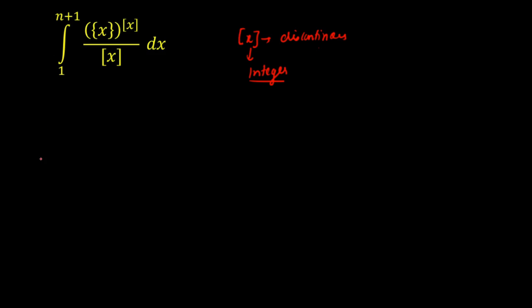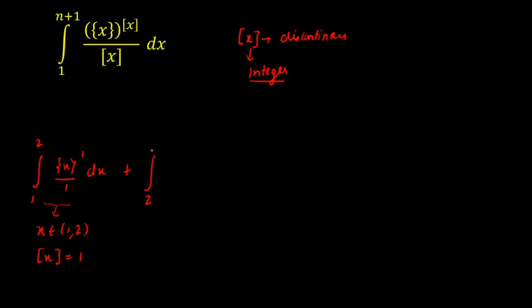First I will break the limit from 1 to 2. Since x is varying from 1 to 2, the value of [x] is fixed at 1. So I will put that value in, giving the integration from 1 to 2 of {x}^1 / 1 dx. Then I will break again at the next integer, since the greatest integer function is discontinuous at integers.